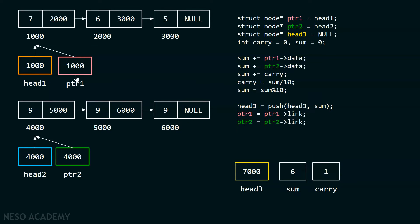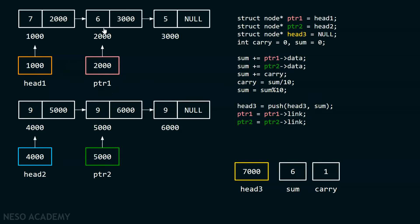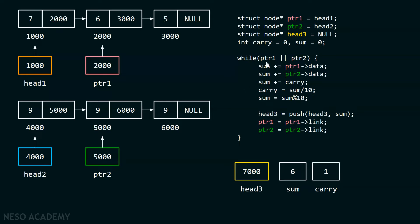After this step we have to update our pointers, since we are done with the addition step. ptr1 is now pointing to the second node and ptr2 is pointing to the second node of this linked list. This whole thing must be repeated, so we put this piece of code within a while loop. The condition is: ptr1 || ptr2, which means ptr1 != null OR ptr2 != null. If both become null, zero is treated as false and we exit the loop. The value other than zero is treated as true, so we can continue.